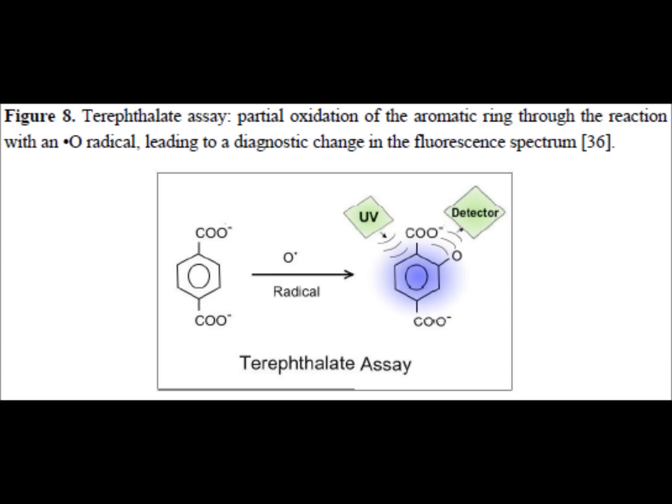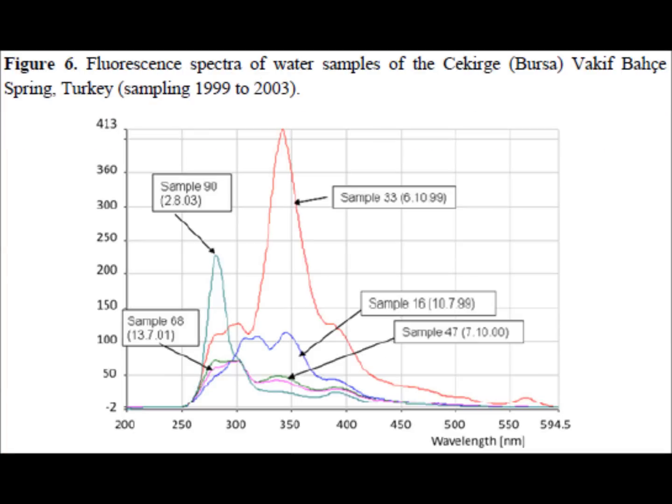Figure 8 shows how partial oxidation will end up creating a change in the fluorescence spectrum. Figure 6 shows the fluorescence spectra of water samples in Turkey over a period from 1999 to 2003. You can see an elevated level — the red line — that occurs just before an earthquake.